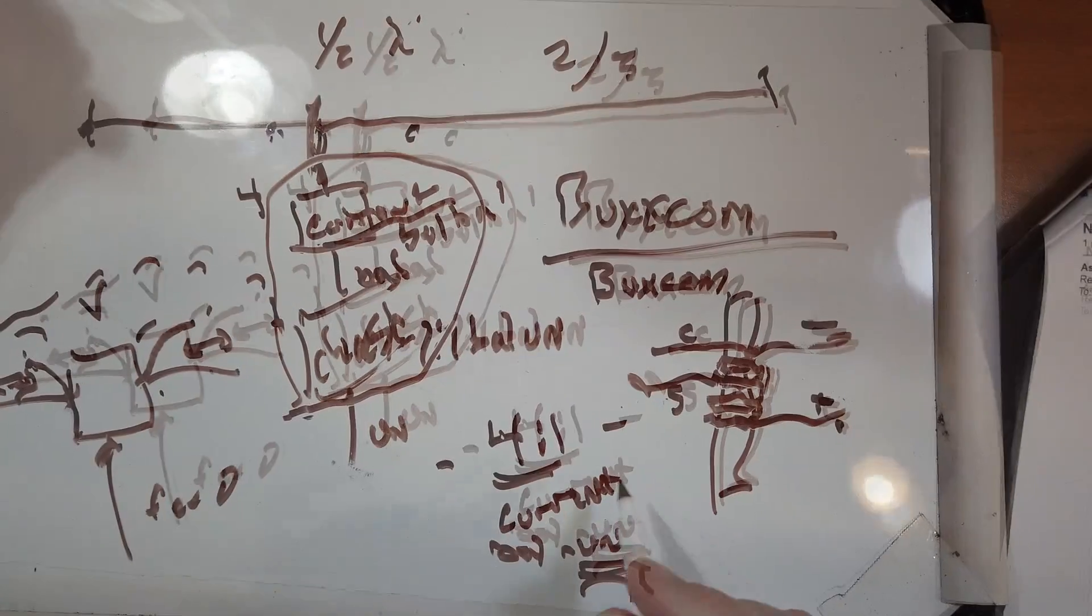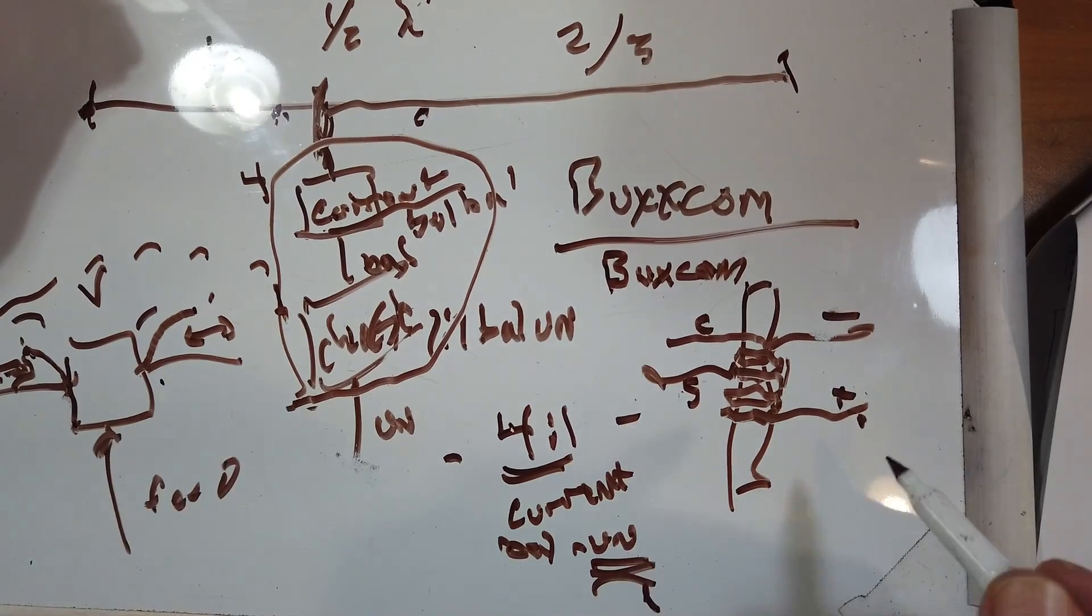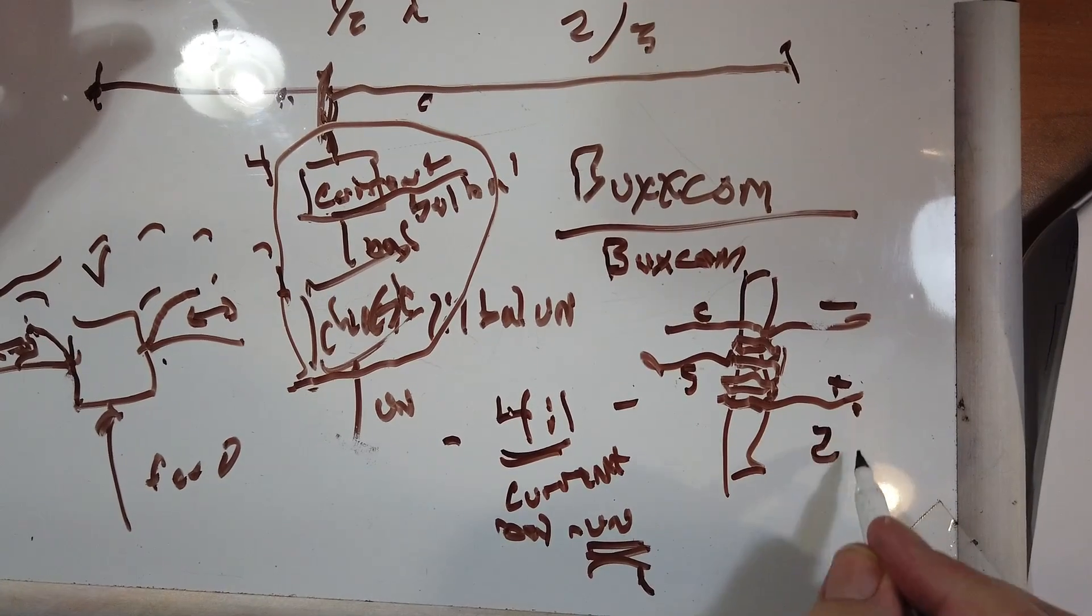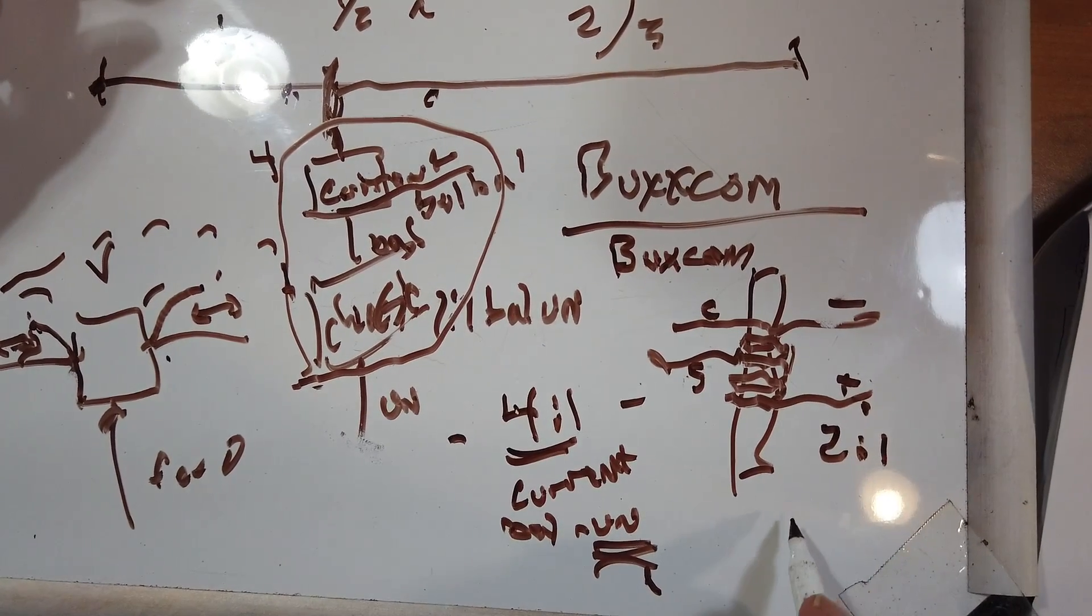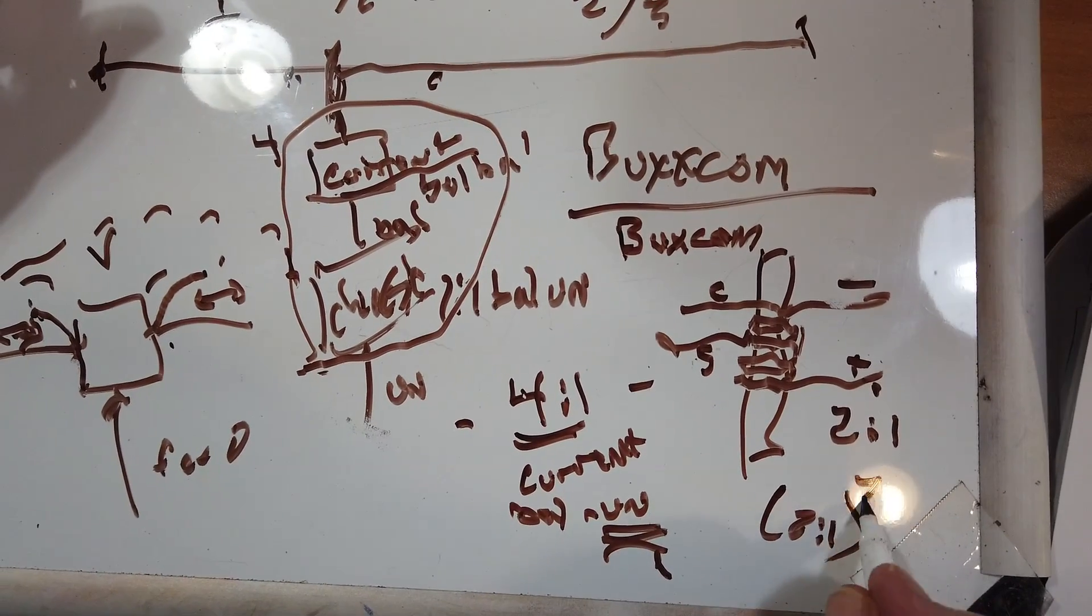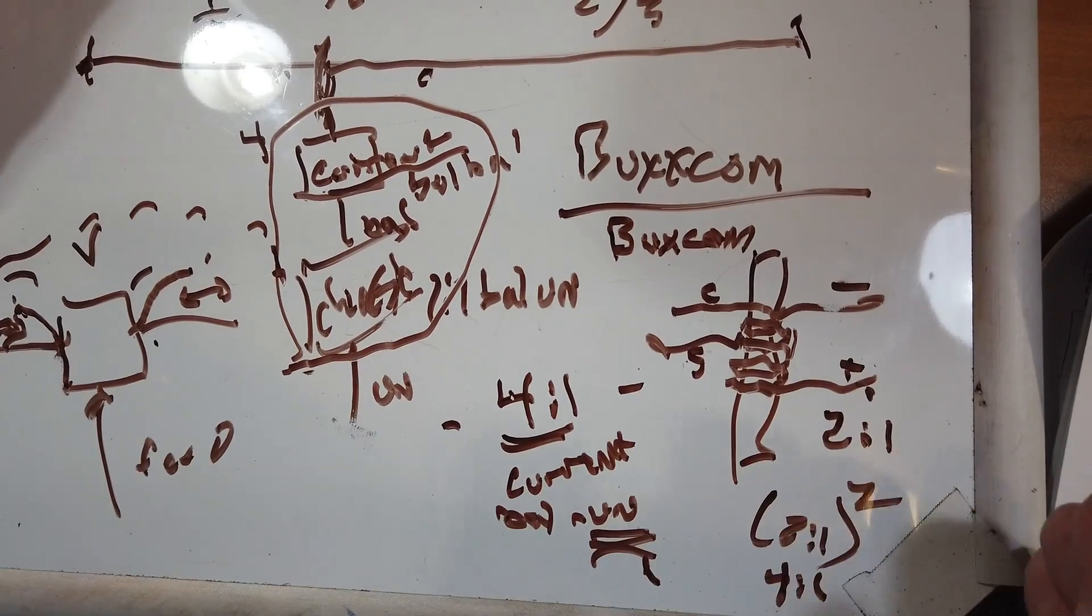Now note here. So the four side goes over here and the one side here. Note that this here is a four-to-one balun. The windings ratio is two to one. But you take the square of that windings ratio, two to one, and you end up with four to one. That's the way baluns work.